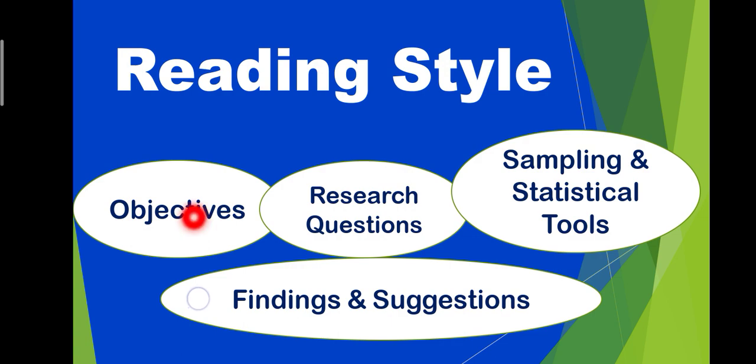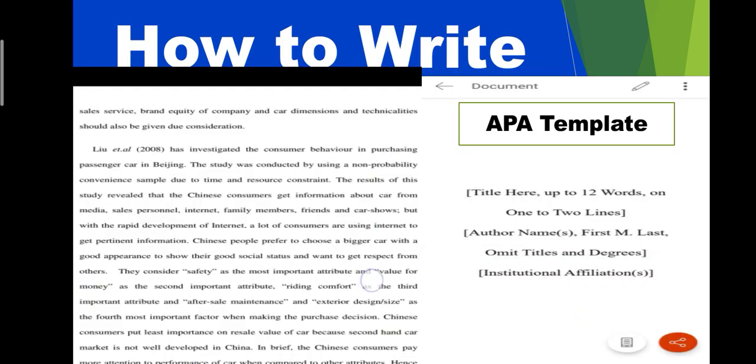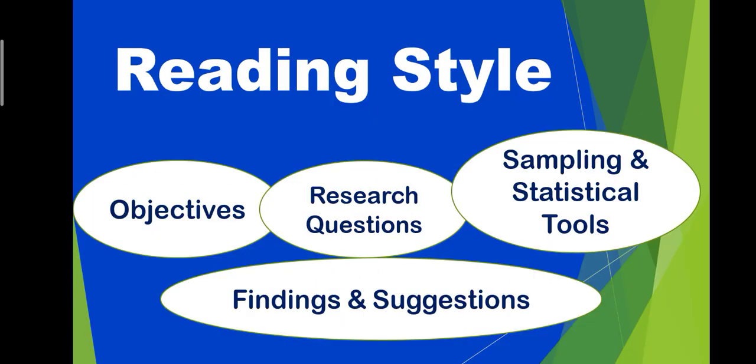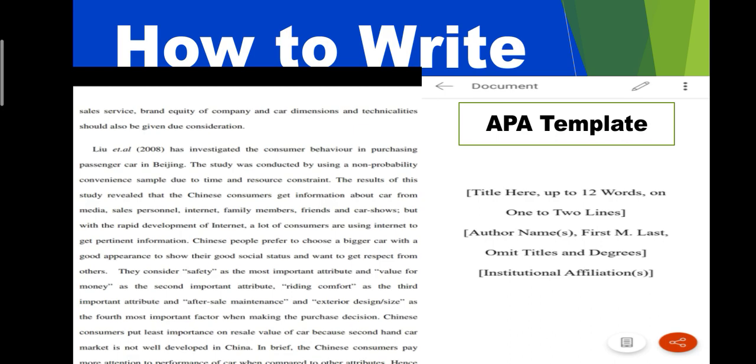Then I will read the review, the objectives, research question, sampling technique, sample size, statistical tools used, findings. Everything I read from the full text article. Then I write it in my own words about what is the title. See here, investigated the consumer behavior. This is the title. Sampling technique mentioned, what is the finding mentioned. In my review, everything I return based on these tips, based on the hints I taken from the full text article.